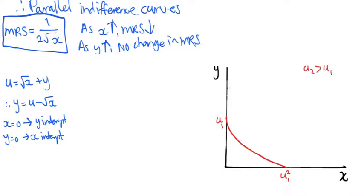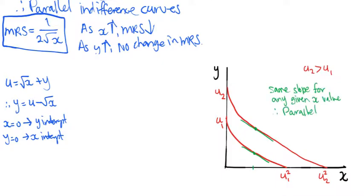A second indifference curve is shown at a higher utility level called U2. The slope of the indifference curves are identical at every given level of x. In other words, the vertical distances are the same. The indifference curves are parallel to each other.